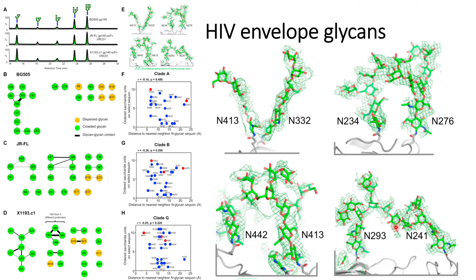This FoFc electron density map is shown for some of the sites in this panel. Later on, they checked whether the interaction between those glycans has some relationship with antibodies.